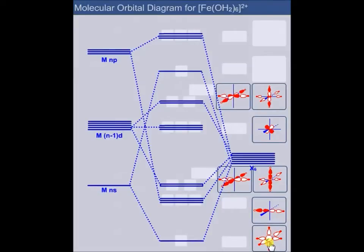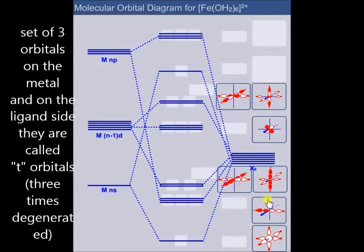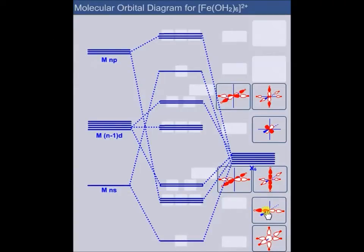This is completely symmetric and you will learn later that in group theory we call this combination a₁g symmetry. The next one is the combination of a set of three: three group orbitals of the ligand with three p orbitals of the metal. The p set, the p x in the middle here, overlaps with the two ligand orbitals and the same on all three axes, so we get three combinations having the same energy.